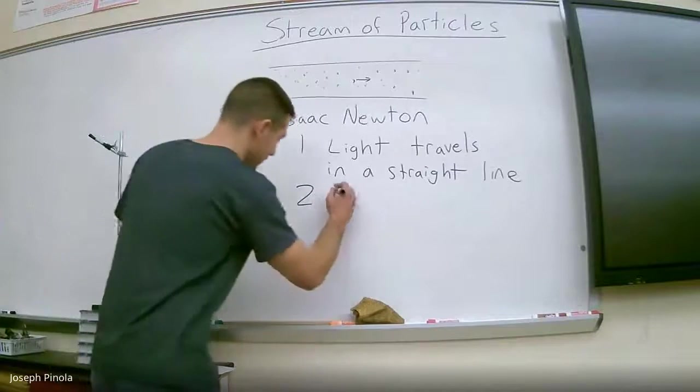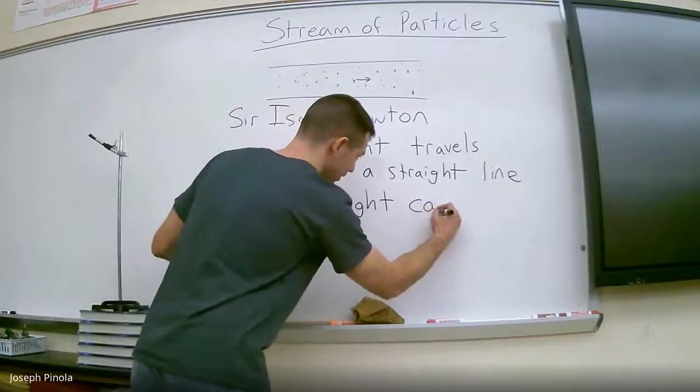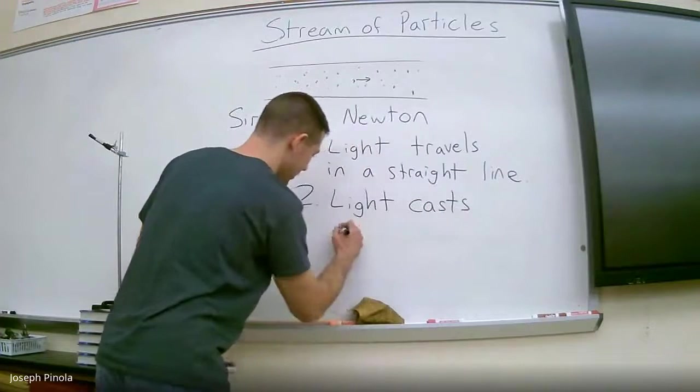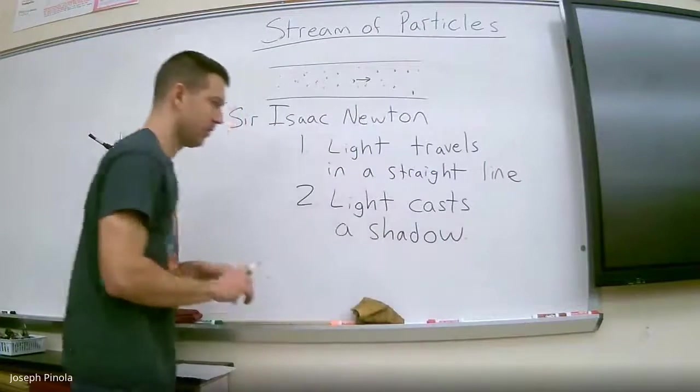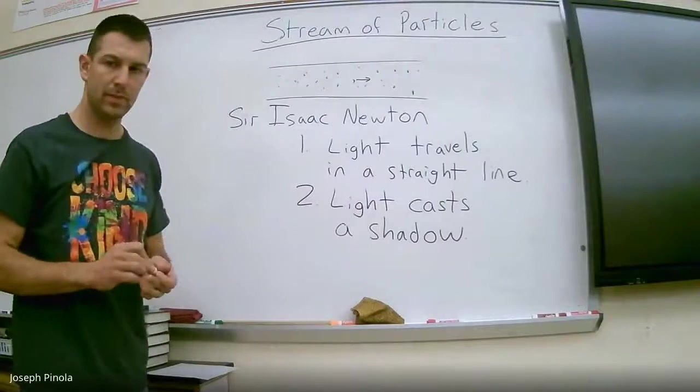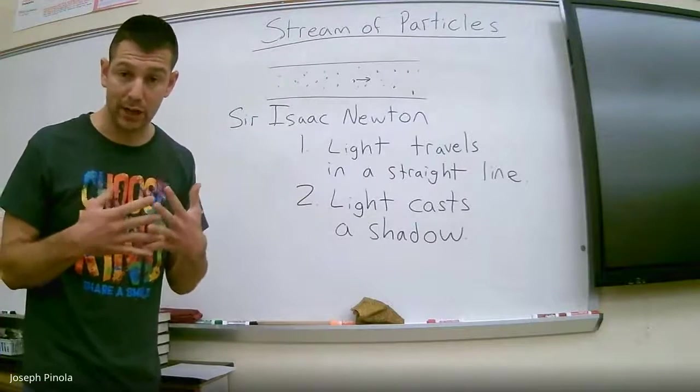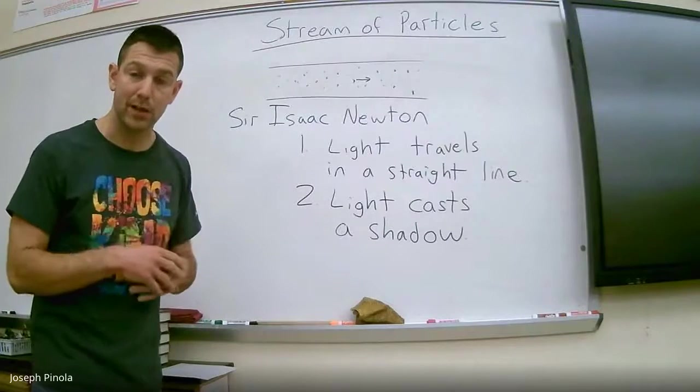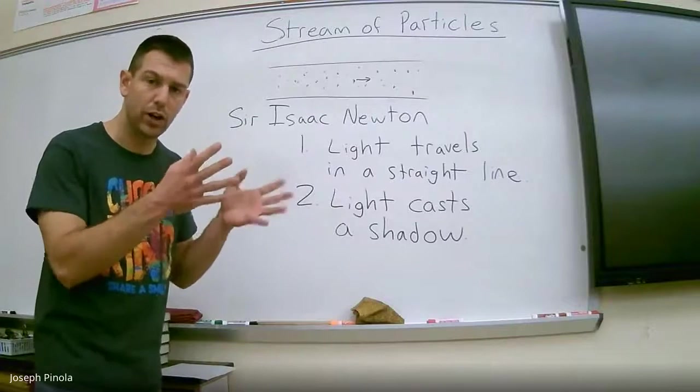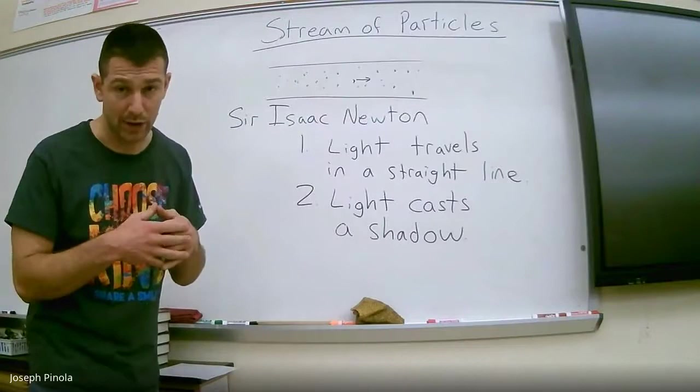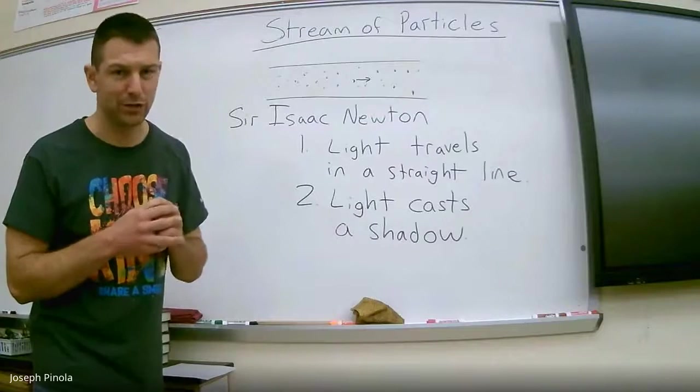Newton also claimed that light was a stream of particles because light casts a shadow. This means that when light is shining on an object, the light is not allowed to pass through. And that's why the area behind a solid object looks dark and it would be encased in shadows. Let me show you a little bit about what that looks like. I'm going to turn off the lights again.